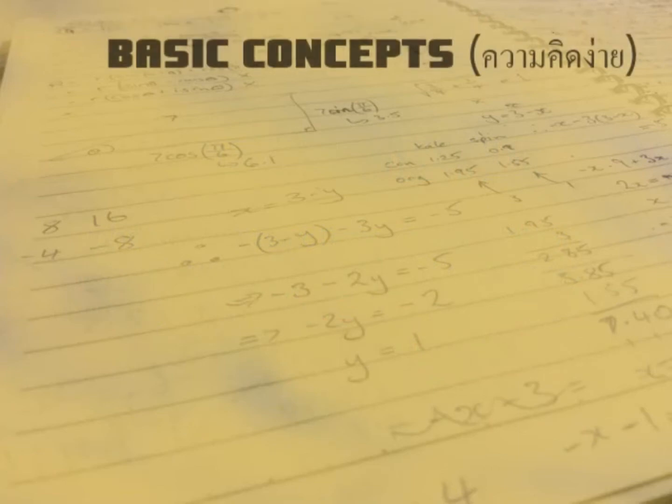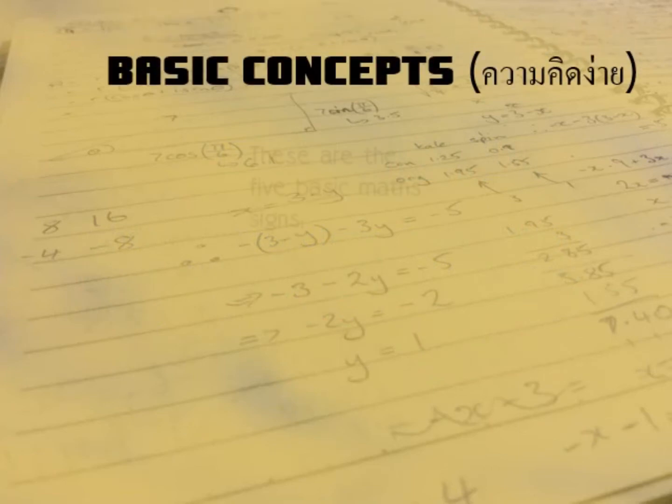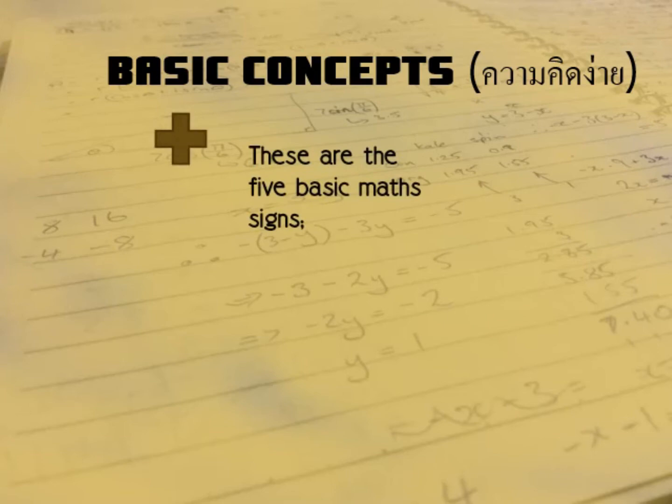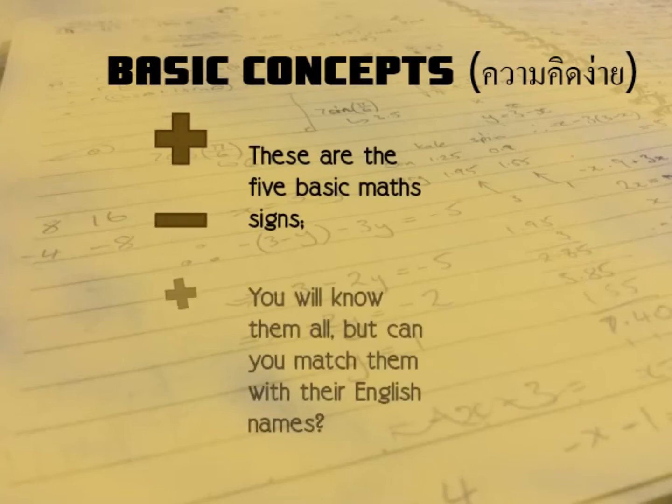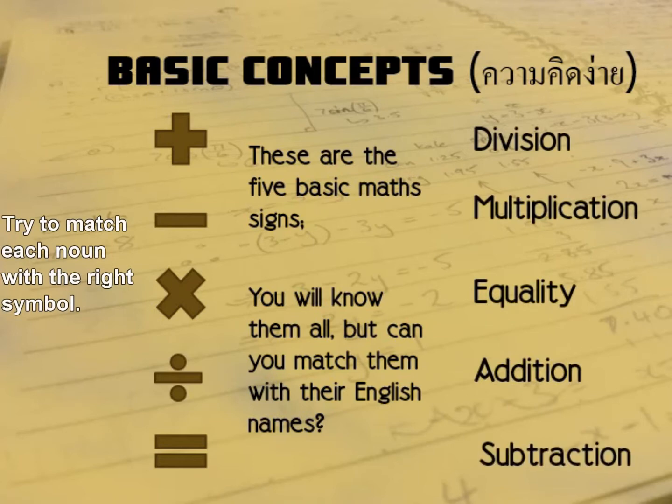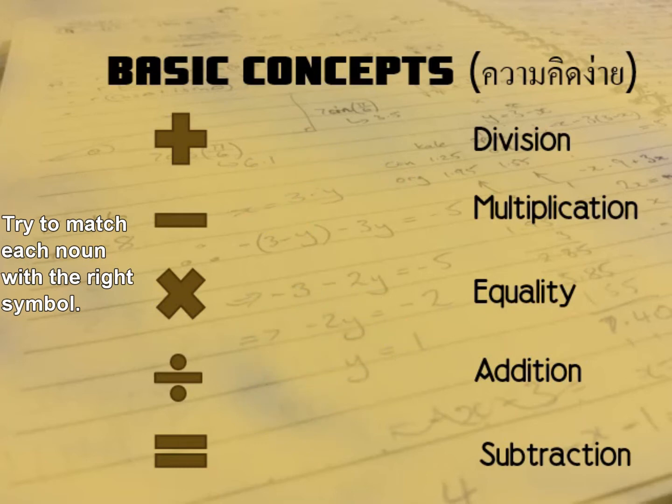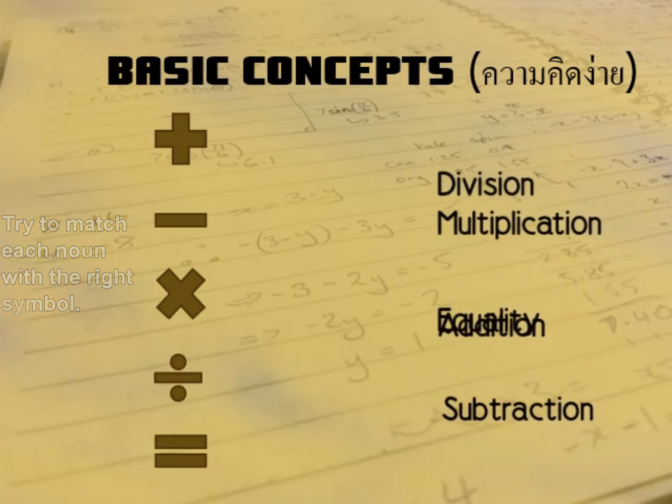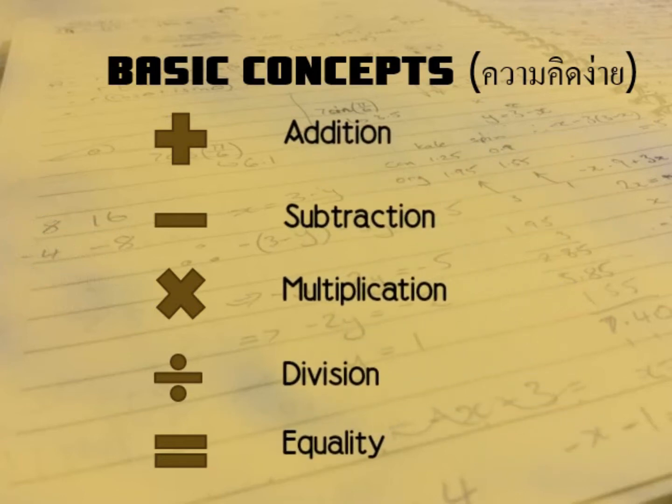We're going to start by looking at the very simplest concepts, the basic ideas behind maths. These are the five basic mathematical operations. Now of course you know these, but what are their English names? Here on the right you can see the abstract nouns for these five mathematical operations. And they go here: addition, subtraction, multiplication, division, and equality. Those are the five basic mathematical operations.